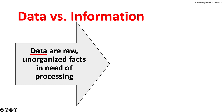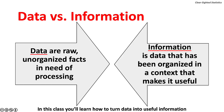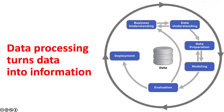Data versus information: data are raw, unorganized facts in need of processing. Information is data that has been organized in a context that makes it useful. In this class, you will learn how to turn data into useful information. Data processing includes a variety of techniques that turns data into information.